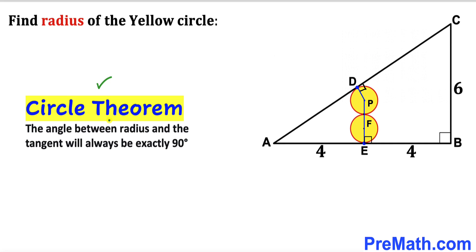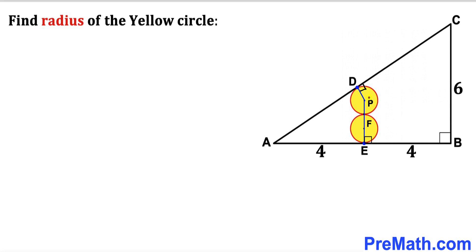Now let's recall the circle theorem. According to this theorem, the angle between the radius and the tangent will always be 90 degrees. These are our tangent lines and these are our radii. Let's suppose that the radius of the yellow circle is lowercase r. Since the two circles are identical, both circles have radius r.